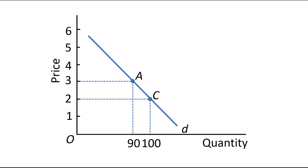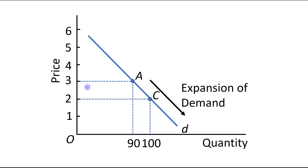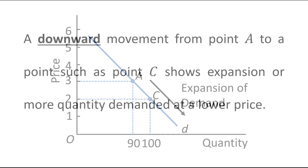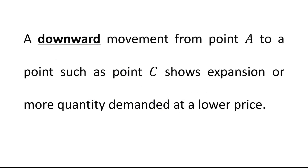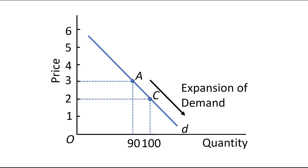The movement from point A to point C represents a downward movement, which means expansion of demand. When price falls from Rs. 3 to Rs. 2, quantity demanded increases from 90 to 100 units. A downward movement from point A to a point such as point C shows expansion — more quantity demanded at a lower price.